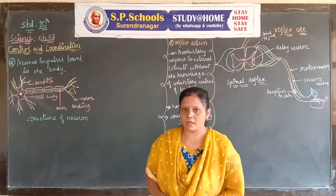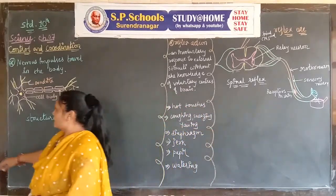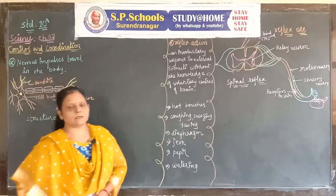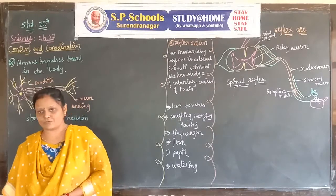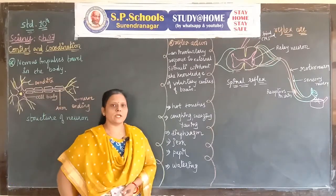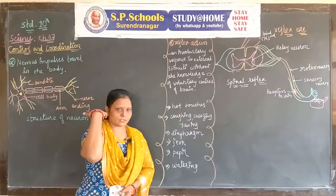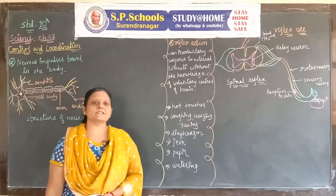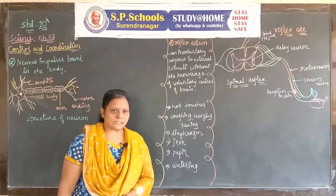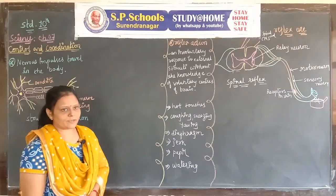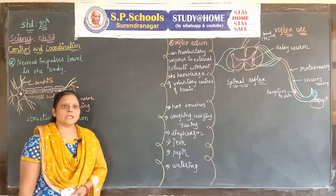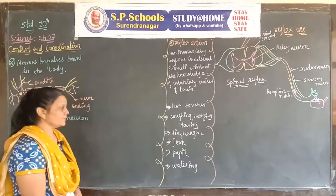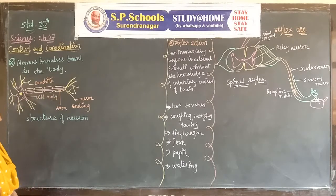Chapter number seven: Control and Coordination. In control and coordination, we already know about two types of systems: nervous system and endocrine system. First we study all about the nervous system. In animals, the nervous system and endocrine system are well developed, also well developed in humans. But in plants, as we know, only the endocrine system can be developed. Now we go through animals and first get the knowledge about the nervous system, then study the endocrine system.